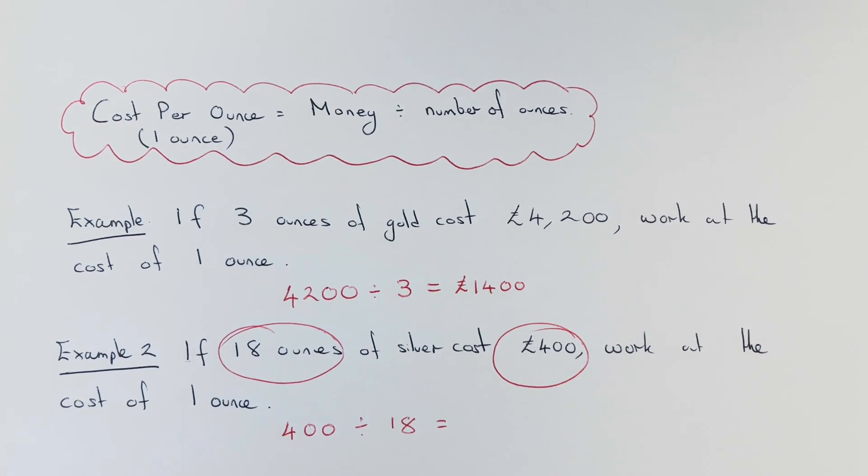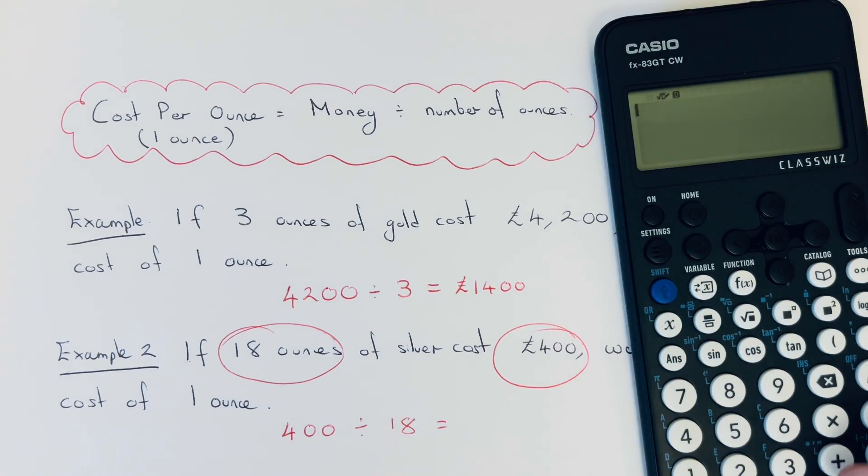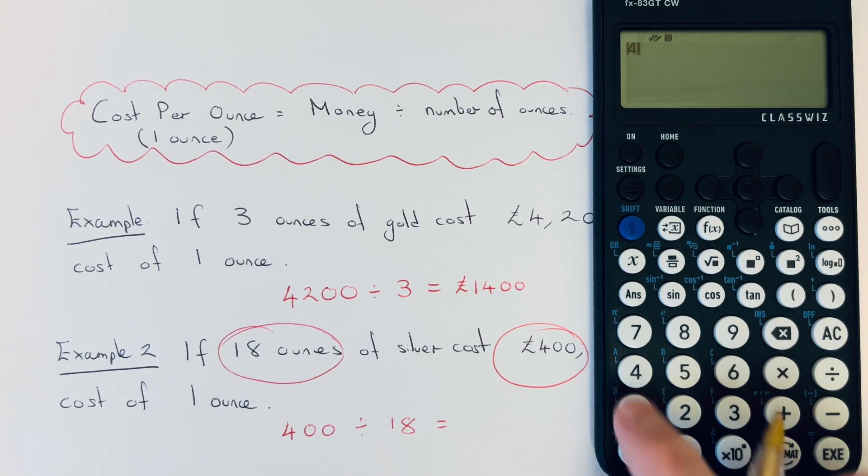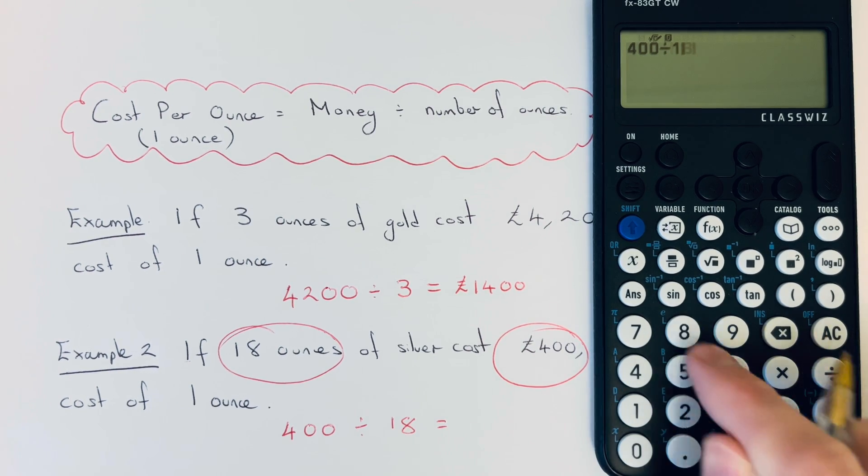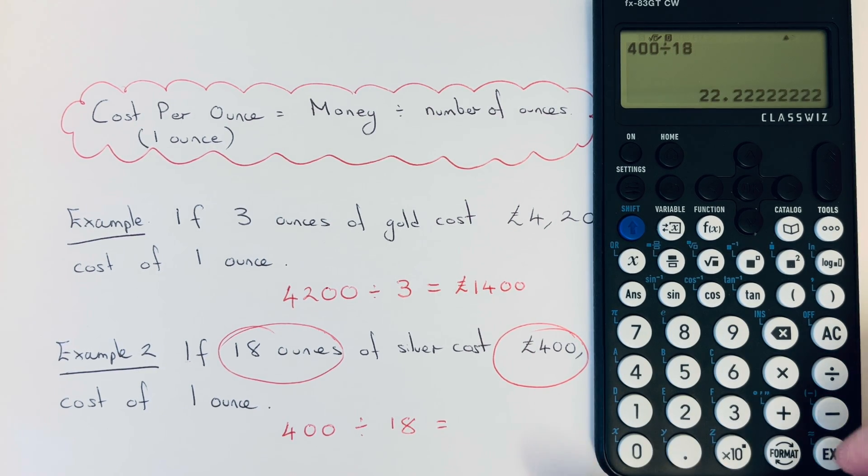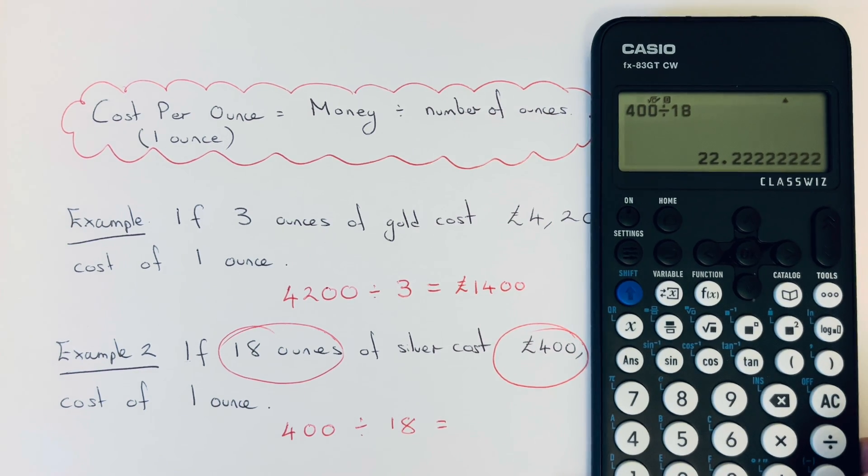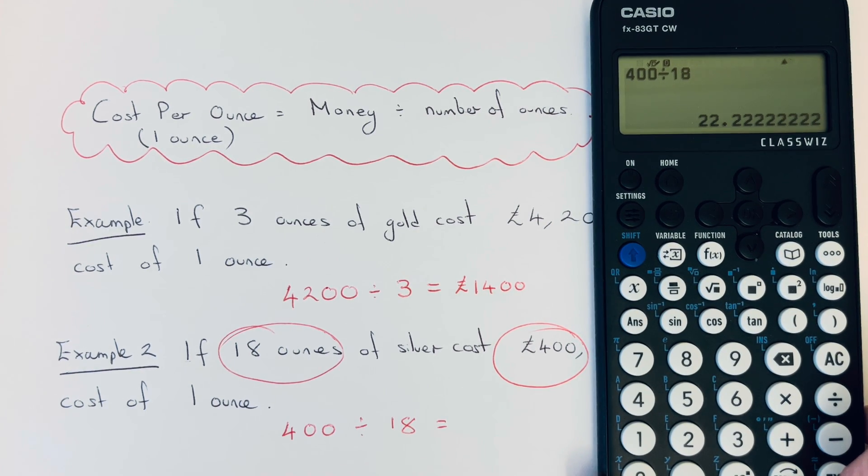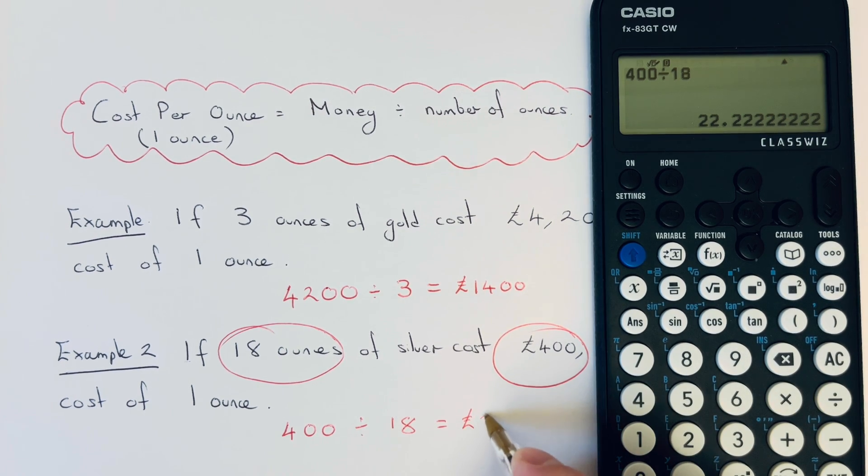So again, we just work this out on a calculator: 400 divided by 18. This time we probably need to round this off to two decimal places, so it would be £22.22, or 22 pounds 22 pence.